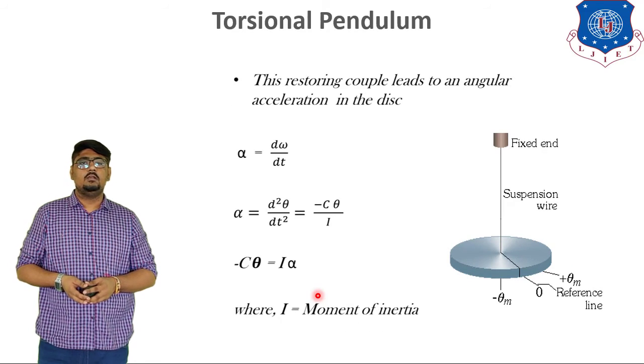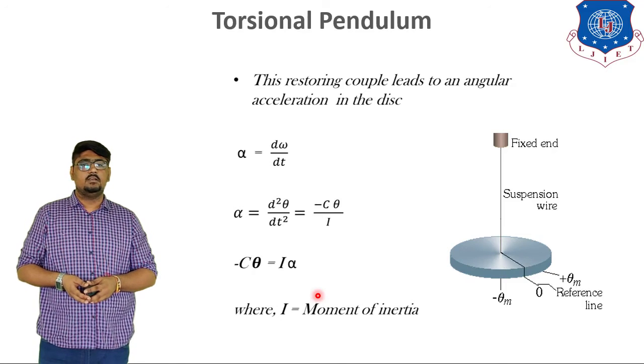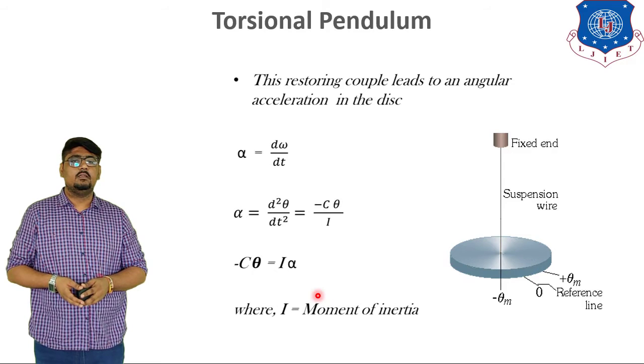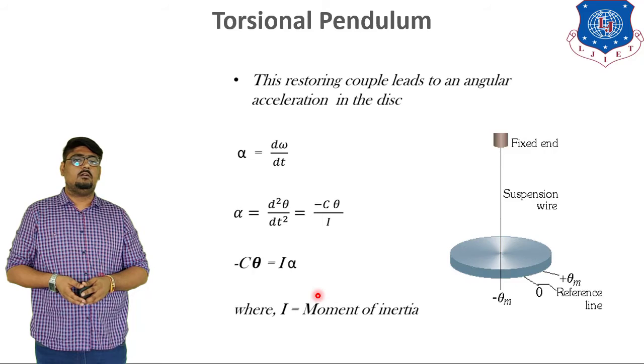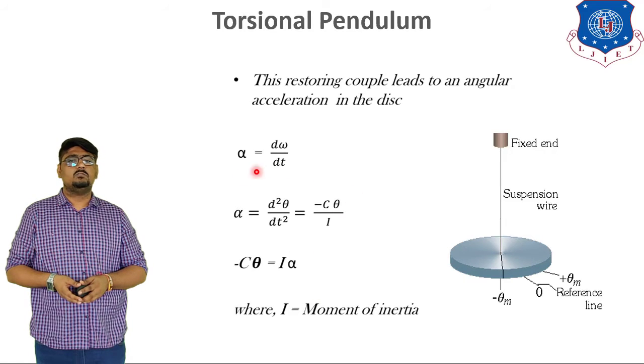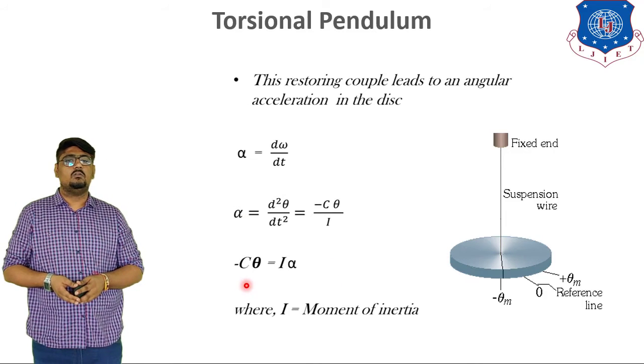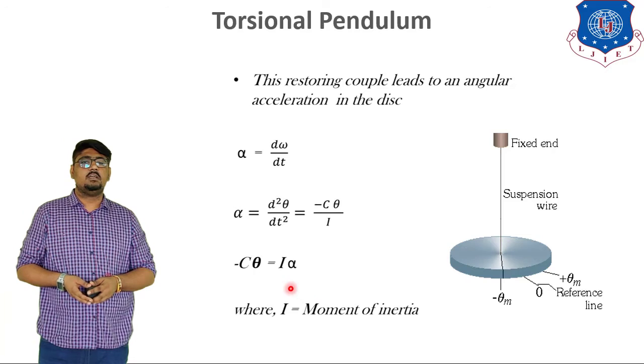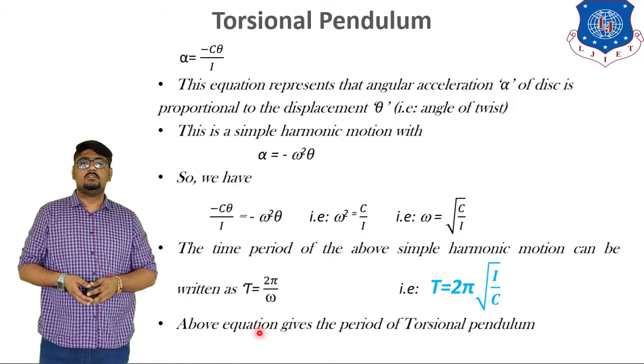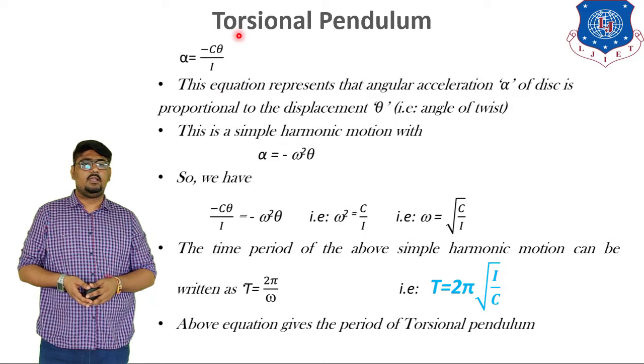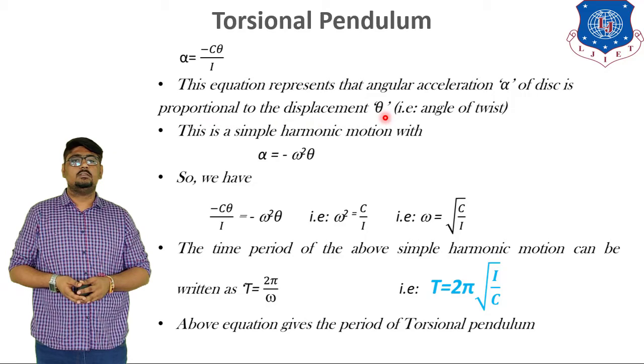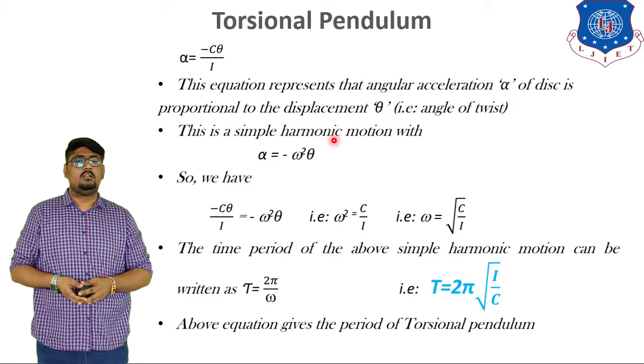So, the restoring couple leads to the angular acceleration in the disc. The angular acceleration alpha is given by the equation alpha is equal to d omega by dt. Now, placing the value, d omega by dt is nothing but d square theta by dt square, which is equal to minus C theta by I. So, we get minus C theta by I is equal to I alpha. Making angular acceleration as the subject, alpha is equal to minus C theta by I. Now, this equation represents that angular acceleration alpha of the disc is proportional to the displacement, that is the angle of twist theta.